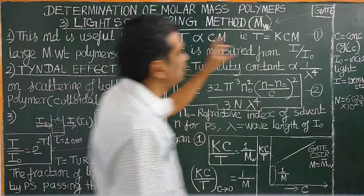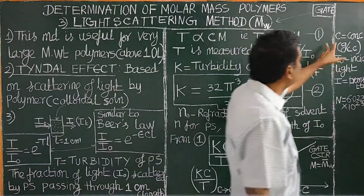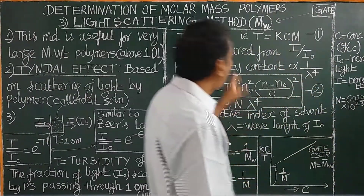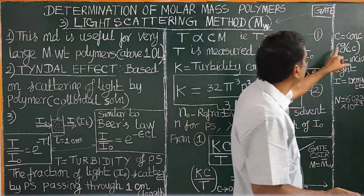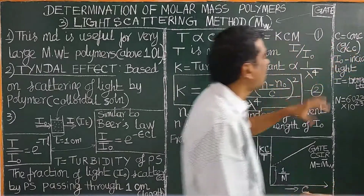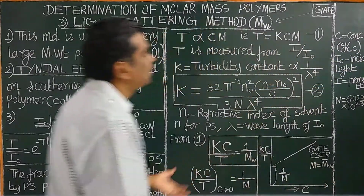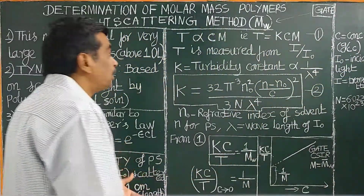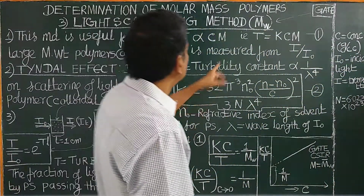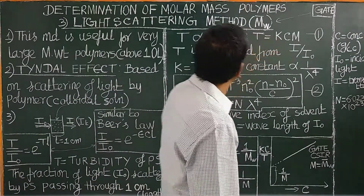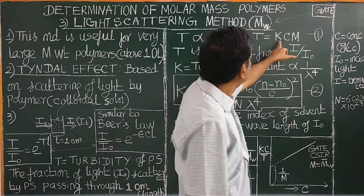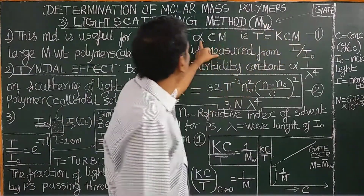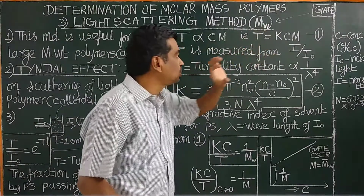The concentration of the polymer is expressed as mass concentration — grams per 100 ml, grams per ml, etc. Therefore, T = KCM, where K is a proportionality constant.